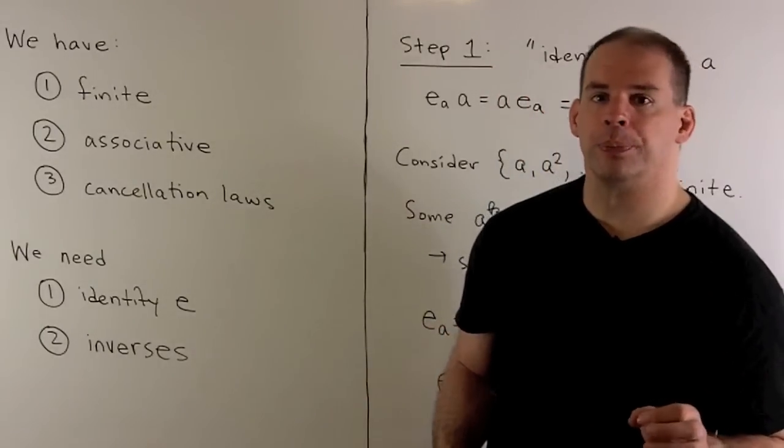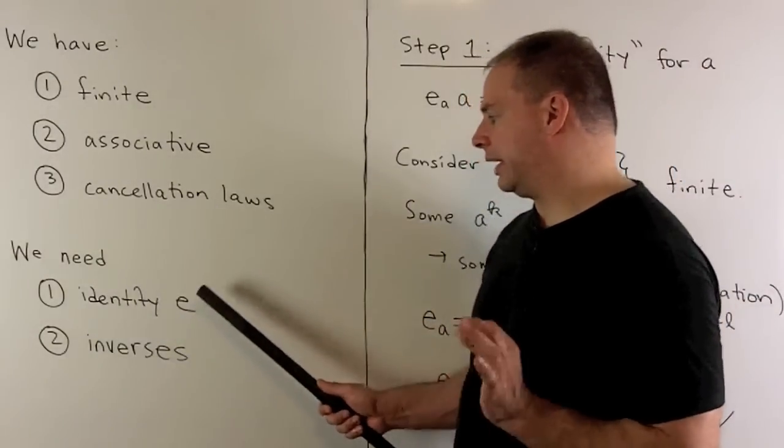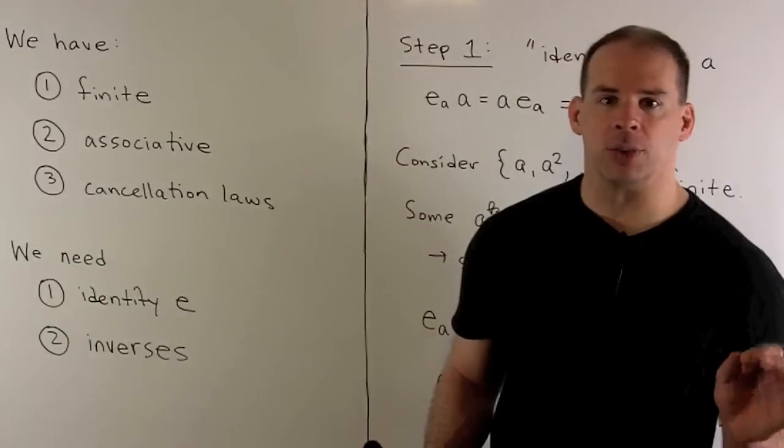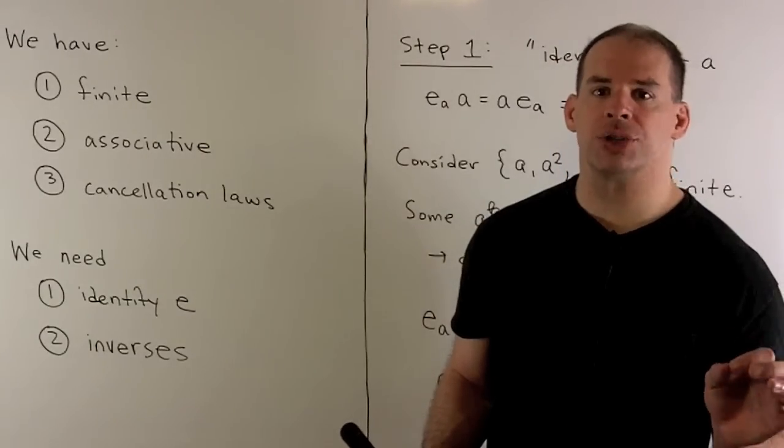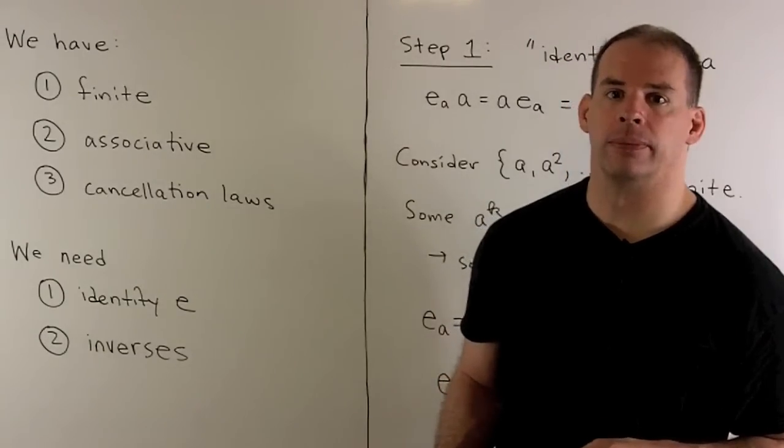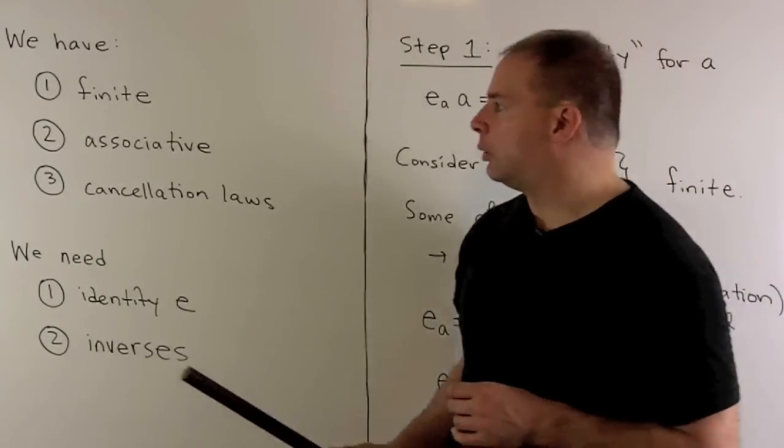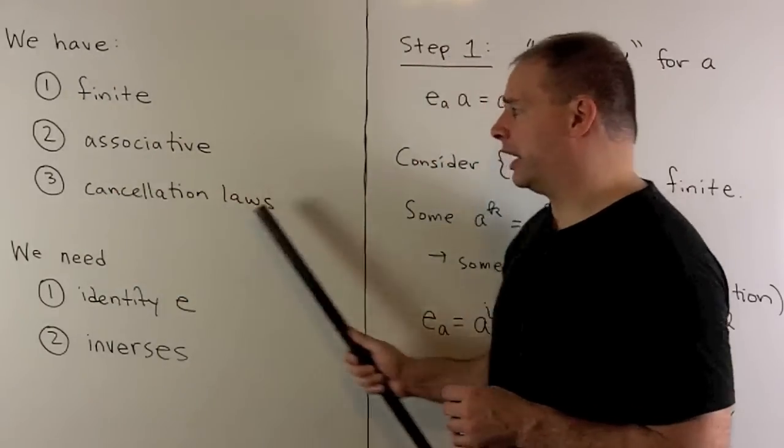What we're trying to show: we want an identity element E in G. Then once we have that, we want to find an inverse for each element of G. Now, we have to get that from our three assumptions.